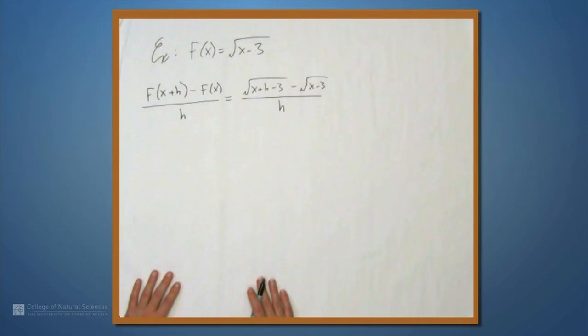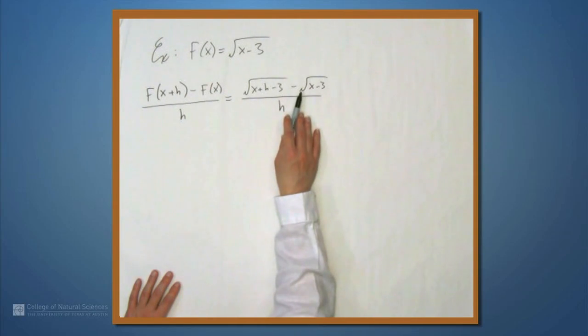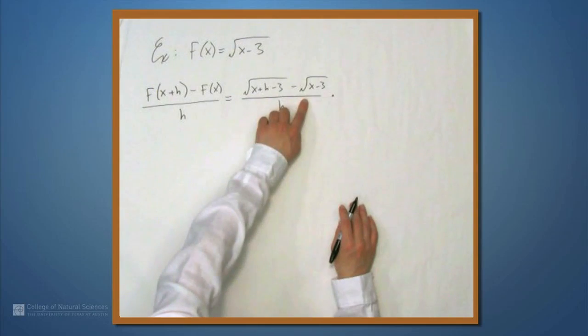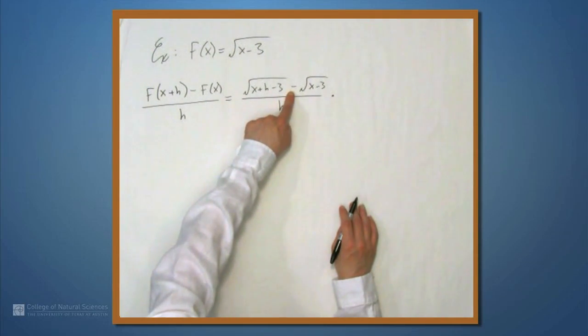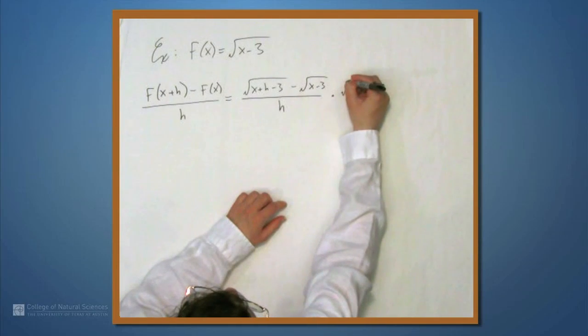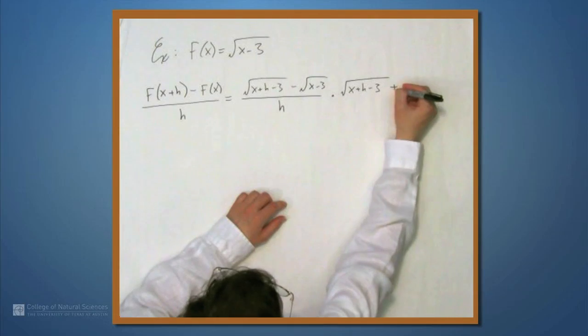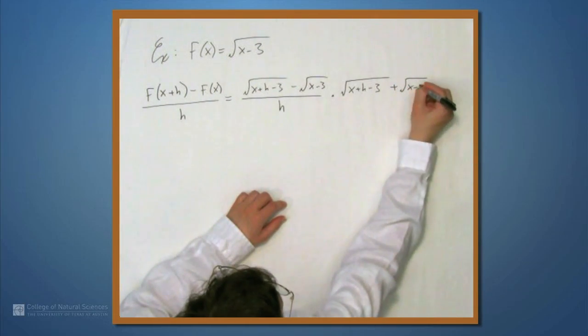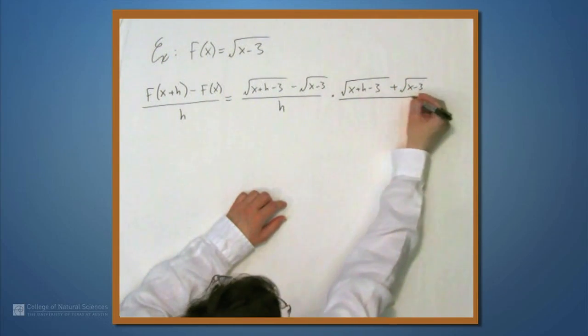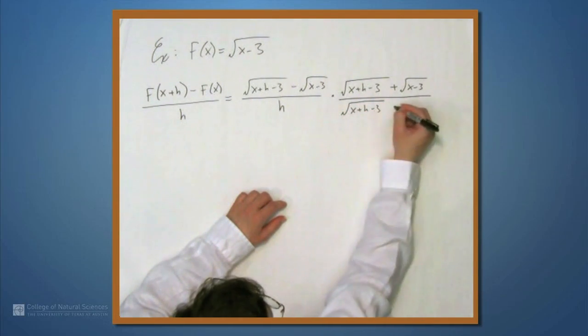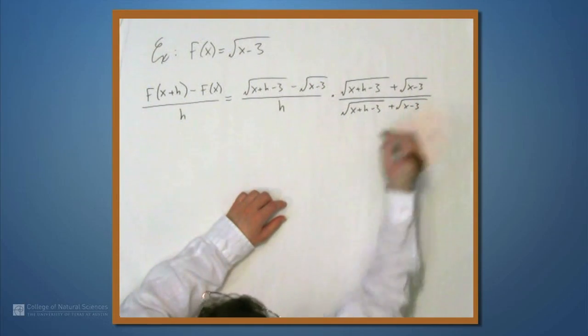How do we deal with this? This is a pretty common pattern when you see expressions with a difference of square roots. We want to multiply by the conjugate. So, we want to multiply by the square root of x plus h minus 3 plus the square root of x minus 3, all over itself.